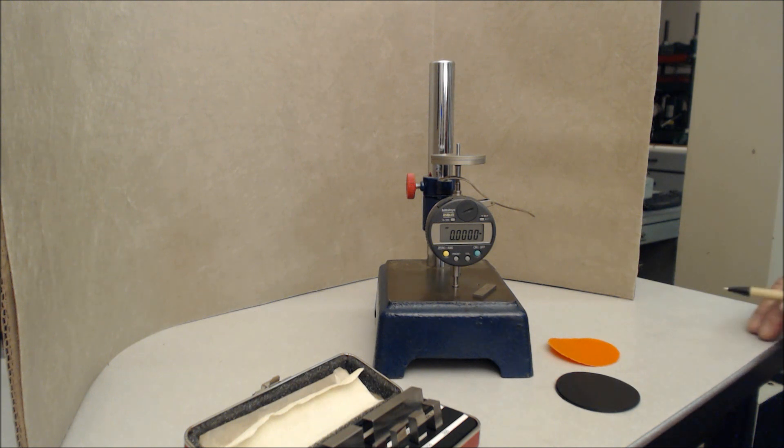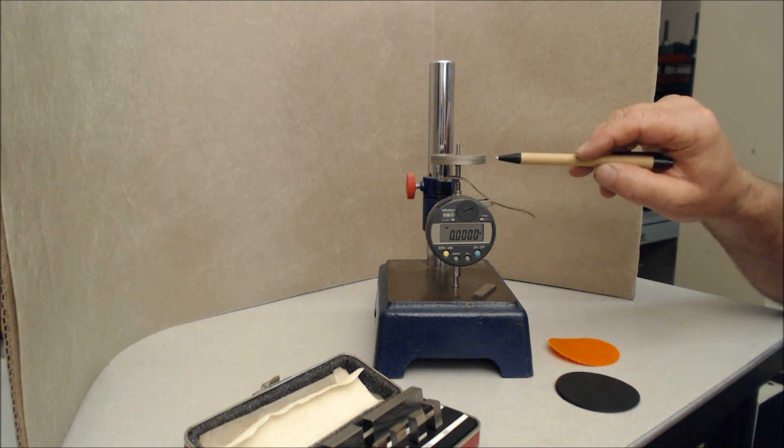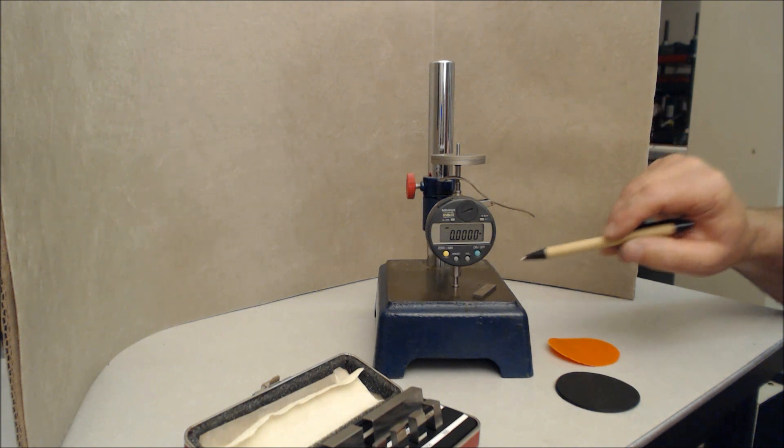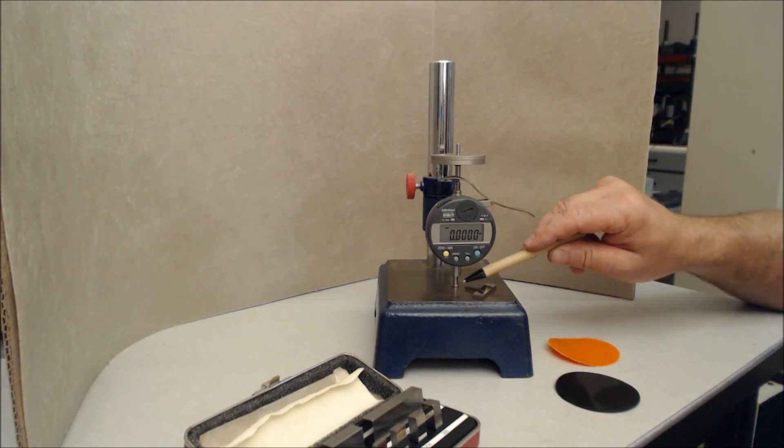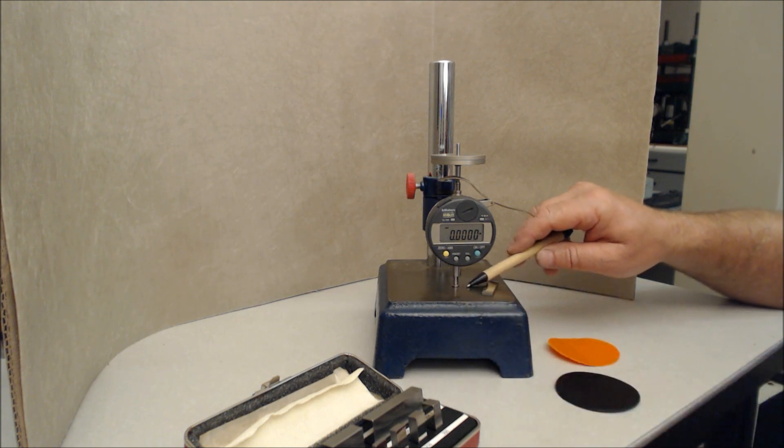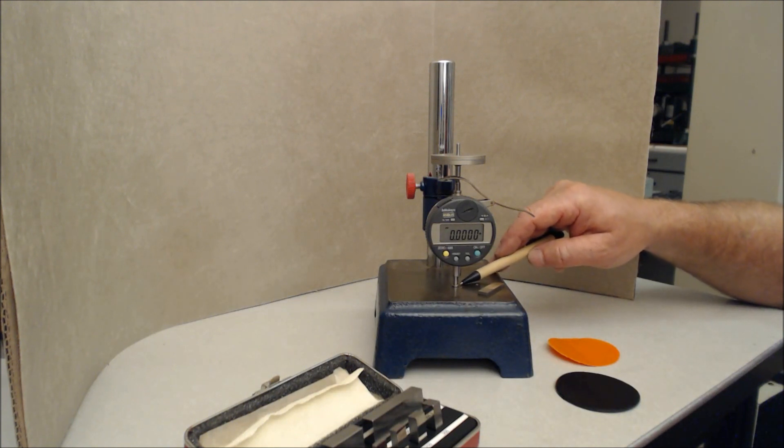First, what we need to do is verify this deadweight device, the deadweight micrometer. It has a deadweight on top which is applying pressure to a presser foot. This presser foot is circular in nature, 0.25 inches in diameter or 6.35 millimeters in diameter.